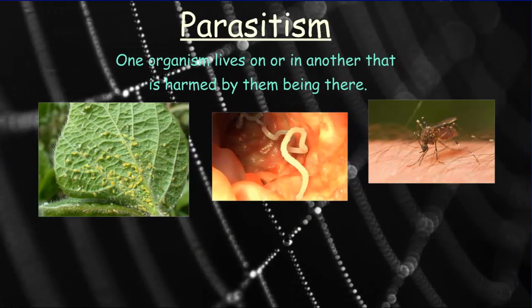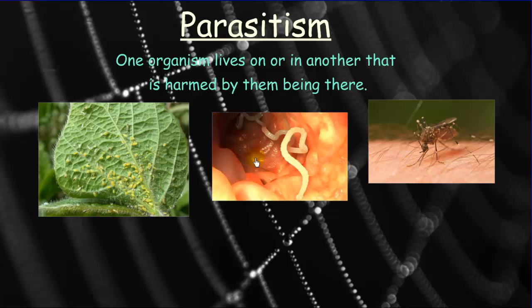The last symbiotic relationship is parasitism, where one organism lives on or in another that is harmed by its presence. The most relatable example is the tapeworm, which attaches to the intestine and draws nutrients from digested food before the host can absorb them. The host gets weakened and may die or be more easily eaten by predators. Aphids and mosquitoes similarly harm their hosts, though not always fatally.